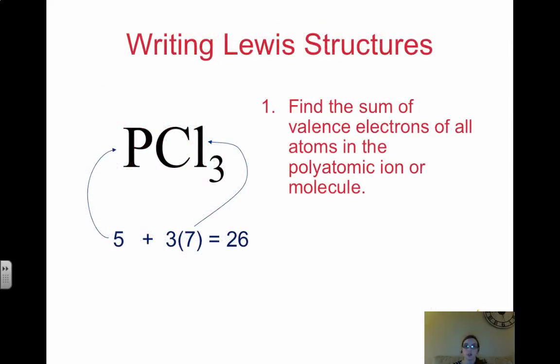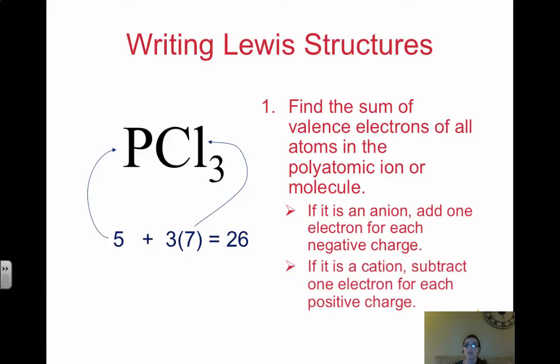So to write Lewis structures, make sure that you add any important information or write any questions down that you have. The first thing you want to do when writing Lewis structures is find the sum of valence electrons of all of the atoms, either in the molecule or in the polyatomic ion. So add up all of your valence electrons. Remember, look at the group number. In the case of phosphorus, it's in group five, so it has five valence electrons, plus three times seven, because there are three chlorines, each chlorine has seven. So you add these up, that's 26 valence electrons.